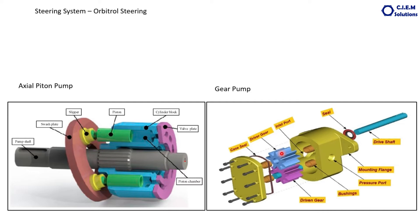Some machines use the spur gear pump instead. The difference between the gear pump and the axial piston pump is that the gear pump has a fixed discharge that depends only on the RPM of the pump, whereas the axial piston pump discharge varies depending on the load requirement — it is called a variable displacement pump. This discharge varies due to the change in angle between the housing and the swash plate, controlled by a governor through load sensing.